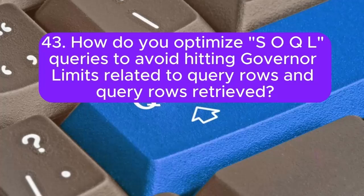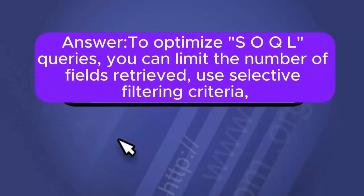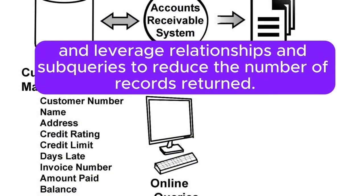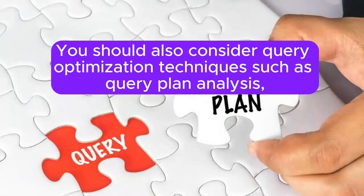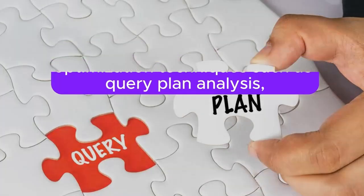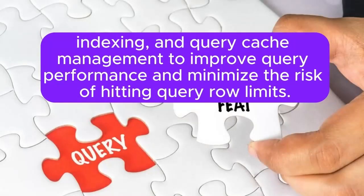Question 43: How do you optimize SOQL queries to avoid hitting governor limits related to query rows retrieved? Answer: To optimize SOQL queries, you can limit the number of fields retrieved, use selective filtering criteria, and leverage relationships and subqueries to reduce the number of records returned. You should also consider query optimization techniques such as query plan analysis, indexing, and query cache management to improve query performance and minimize the risk of hitting query row limits.